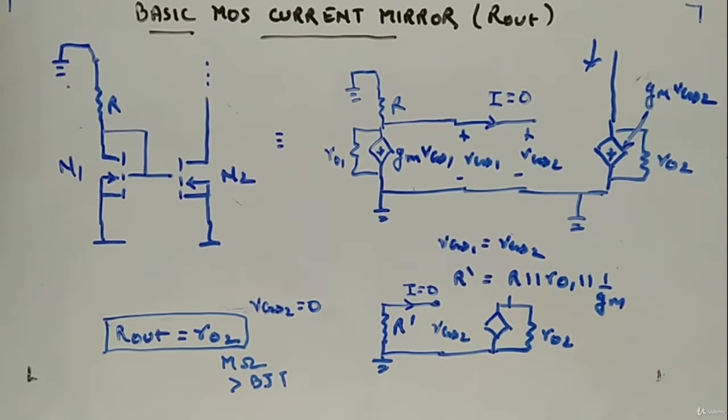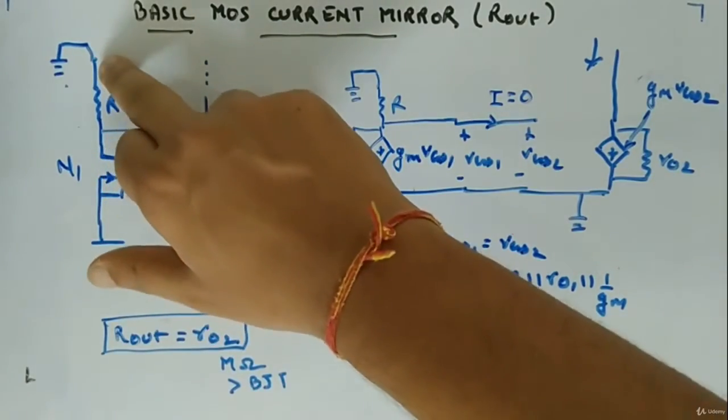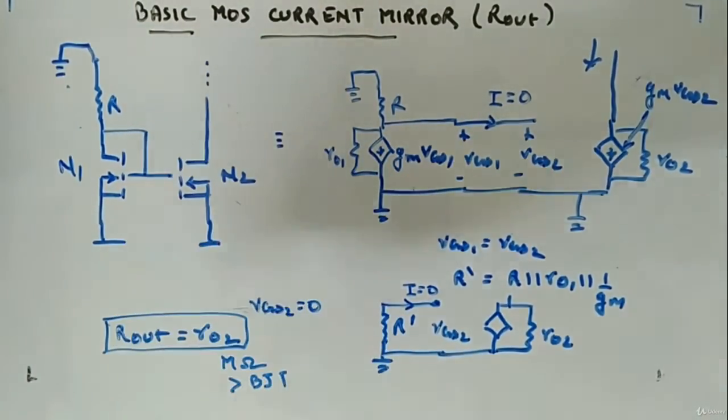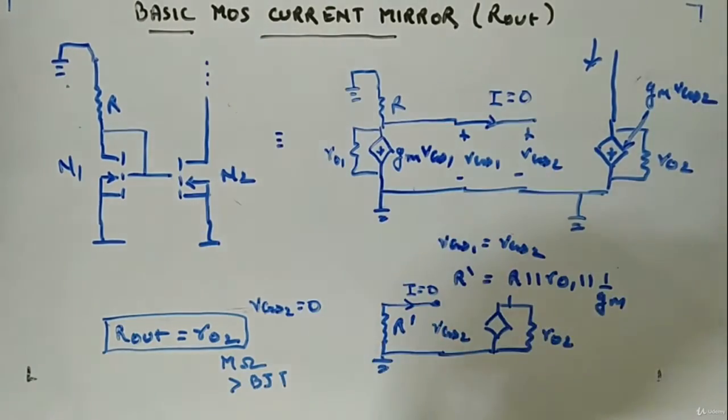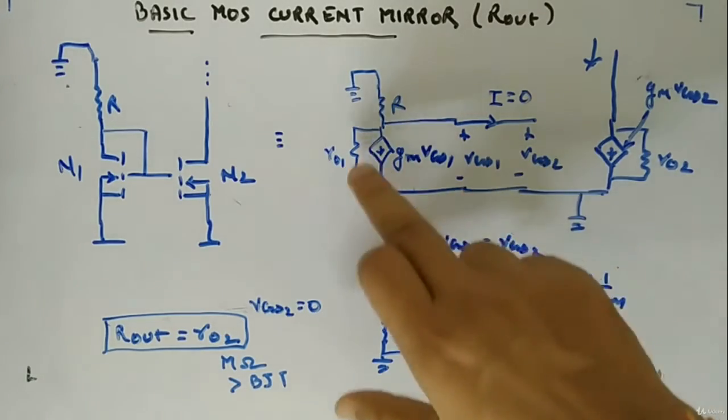Okay, let's now quickly calculate the value of RO. So VDD will be ground, we have to replace the NMOS's. So this will be the equivalent circuit of this basic current mirror MOS circuit.